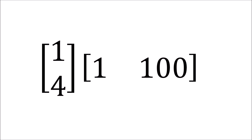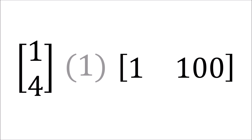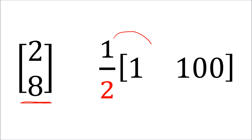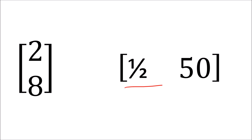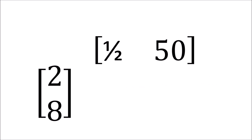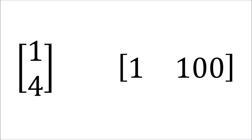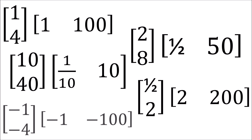If we take our column-row multiplication, we can insert the number 1 in the middle without changing anything. We can then break up this 1 into 2 times 1/2. Multiplying the column on the left by 2 gives us components (2, 8), and multiplying the row on the right by 1/2 gives us (1/2, 50). This gives another valid solution. In fact, we can multiply the column by any nonzero scaling factor S and multiply the row by 1 over S and still get the same matrix, since the S and 1/S cancel. So there are an infinite number of solutions to factoring a matrix into a column and a row.